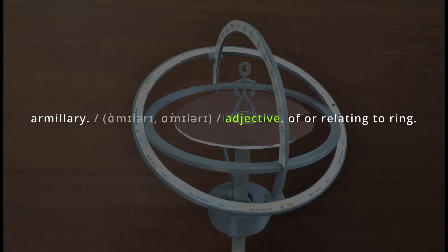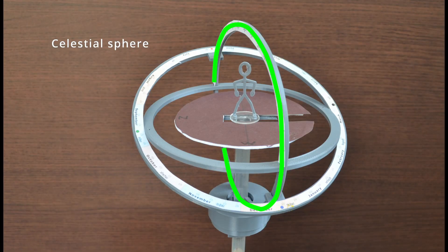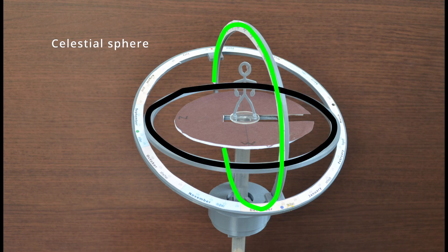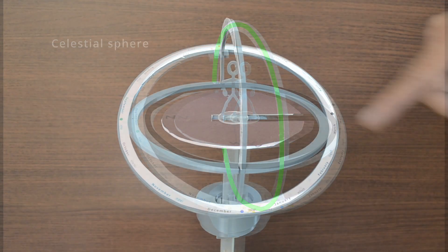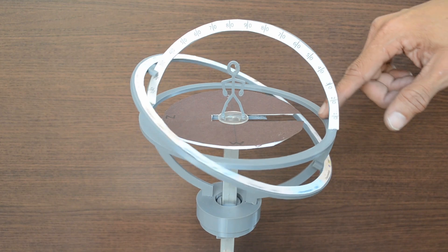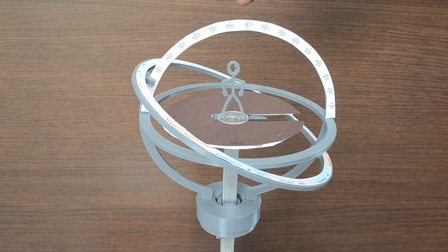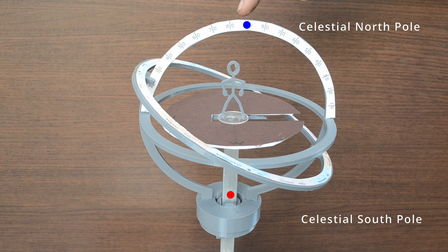Armillary means consisting of hoops and rings. These two rings represent the celestial sphere. This is celestial north pole and this one south pole.